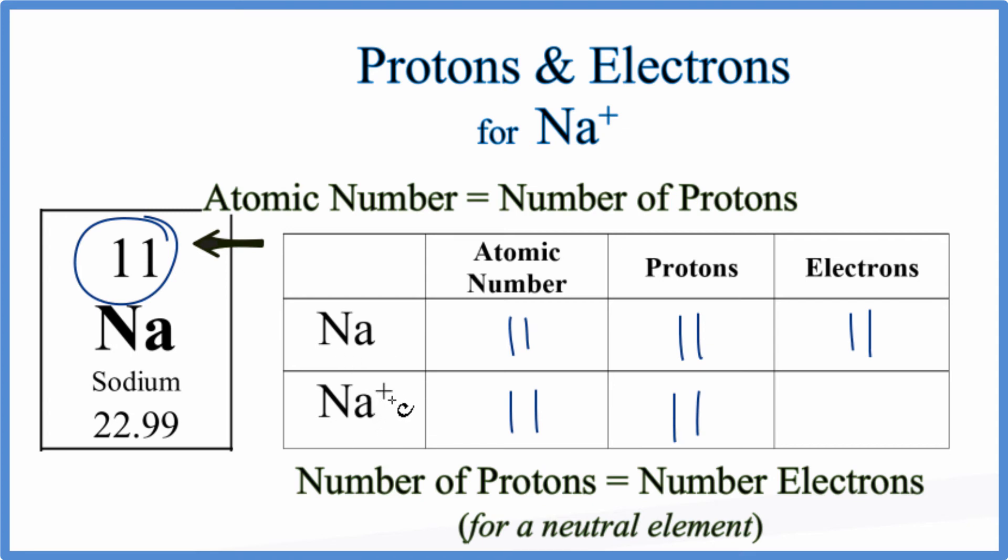For ions, we lose electrons. They're negative. So we've lost one electron to form the sodium ion. So 11 minus 1, that gives us 10. So for the sodium ion, we have 10 electrons.